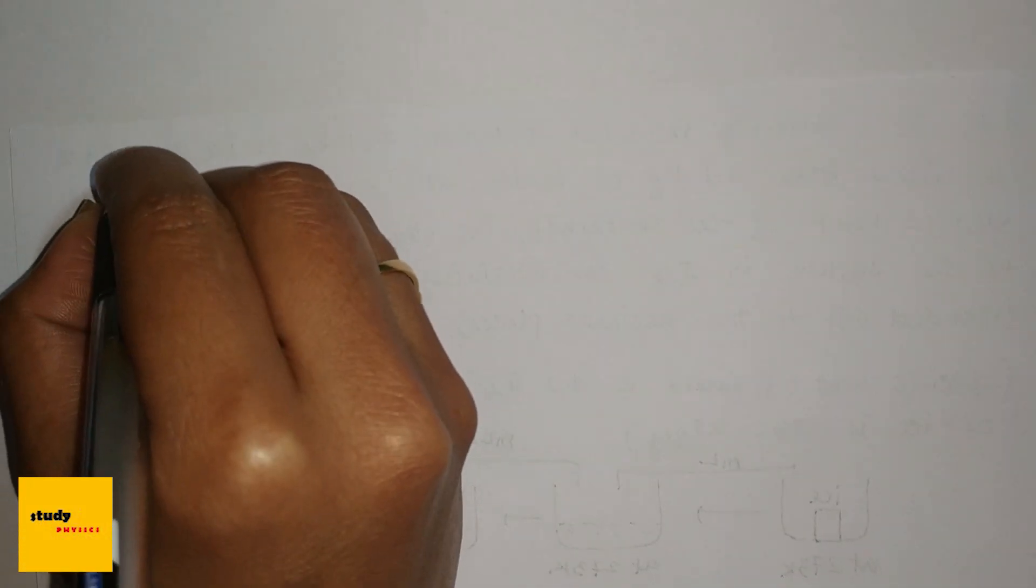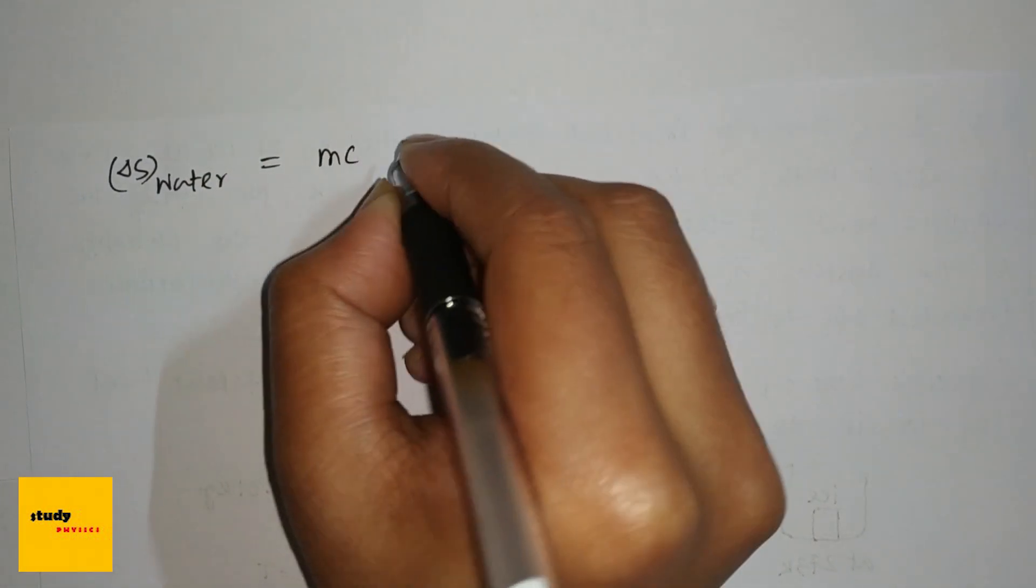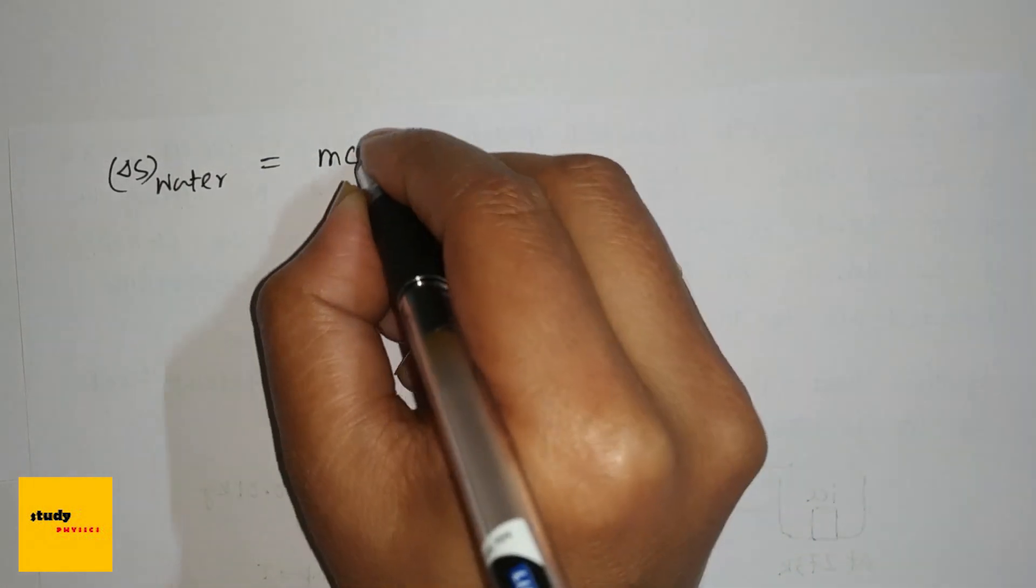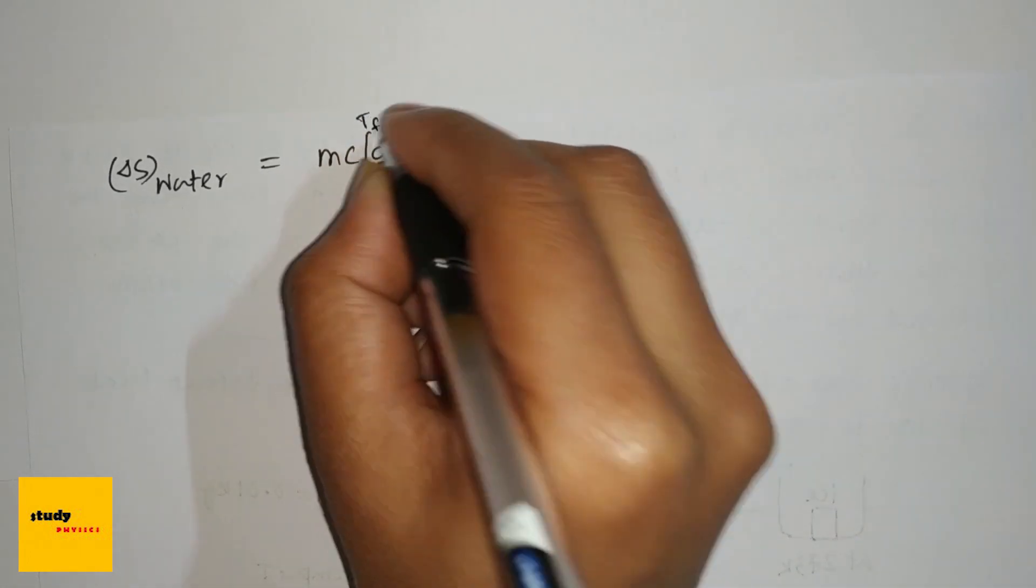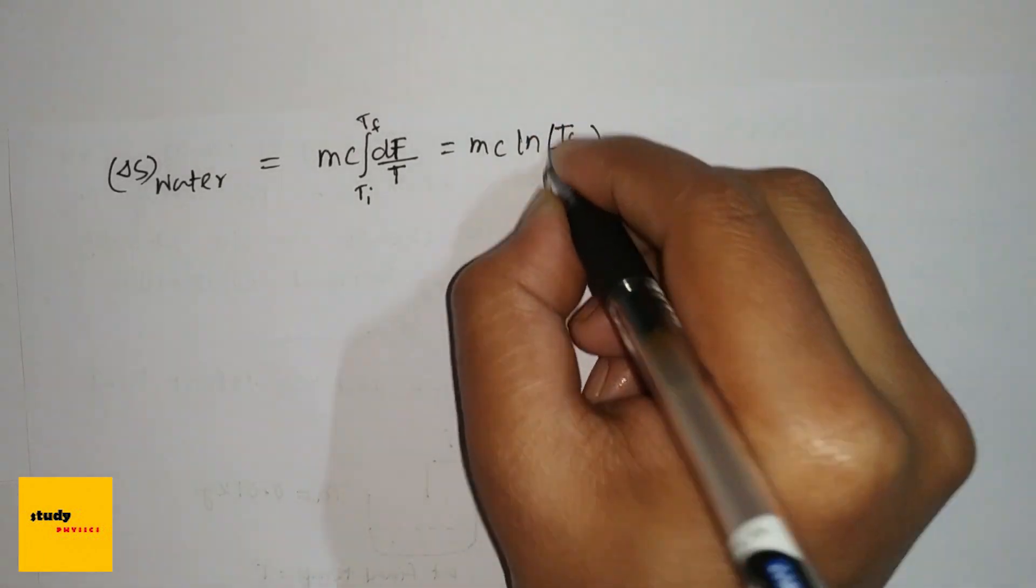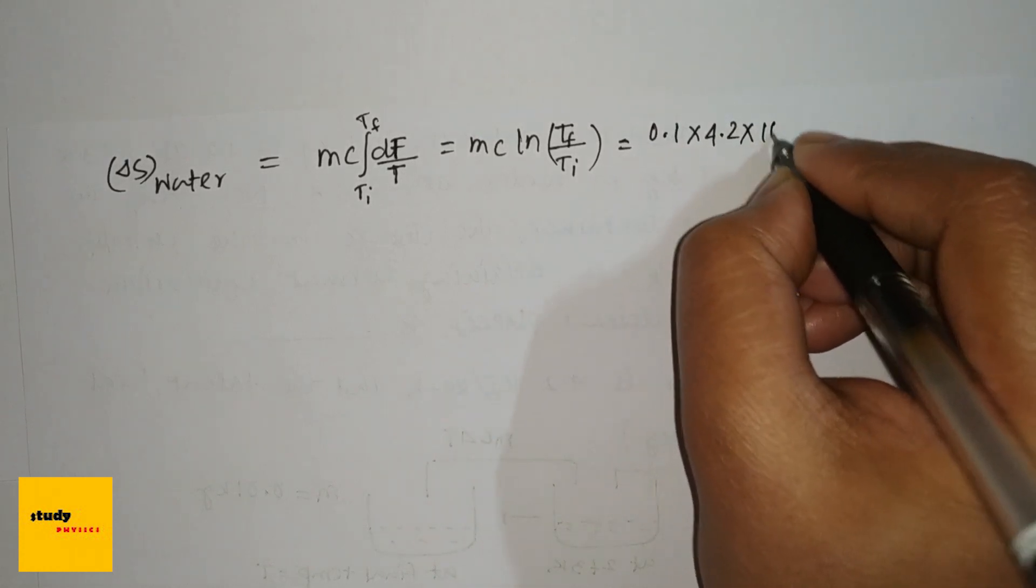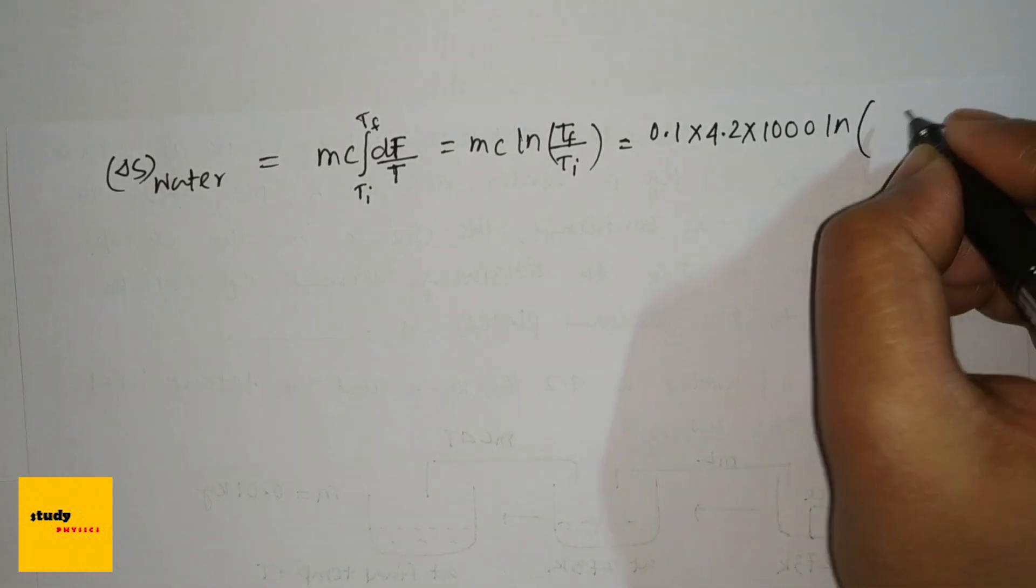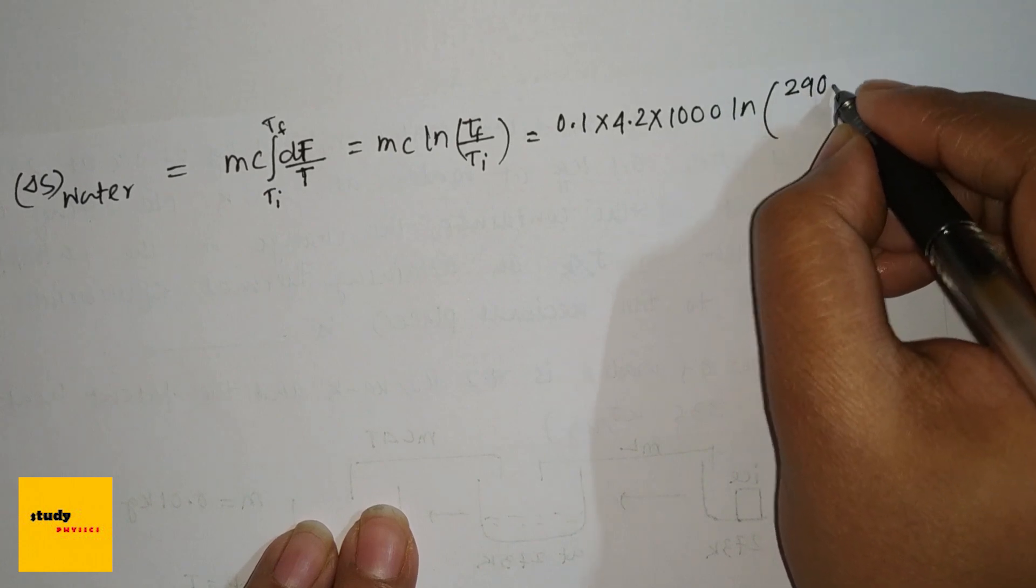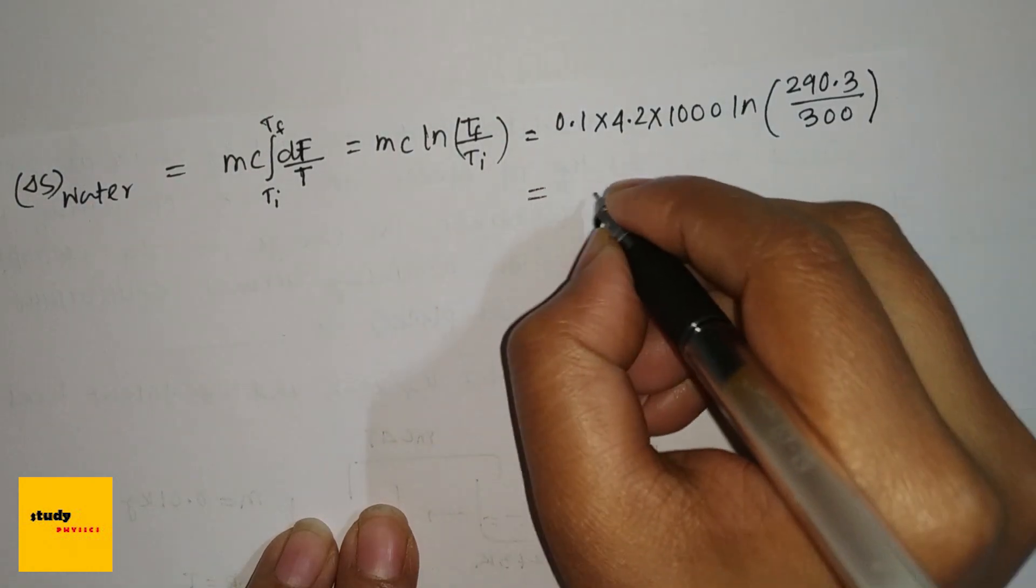And entropy of water is mc dT divided by T, so mc ln T_f divided by T. Here, 0.1 times 4.2 times 1000, ln of 290.3 divided by 300. So this is minus 13.80.